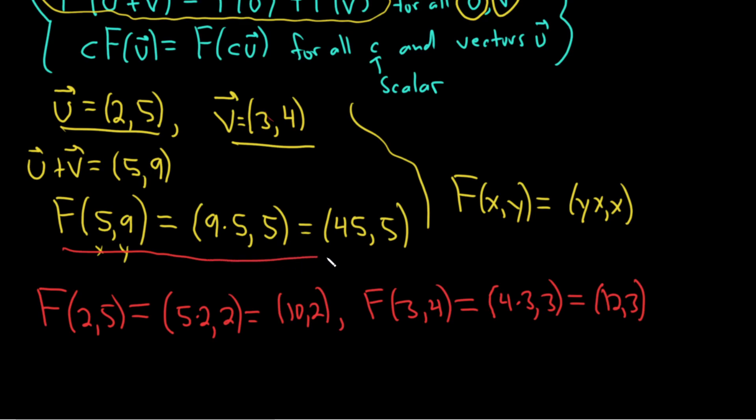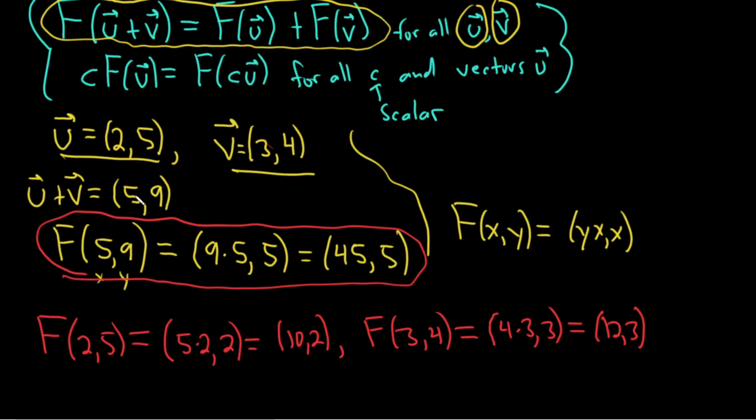So now we're going to check by adding these. So F of 5, 9 is equal to this. That's F of u plus v. That's the left-hand side. So it's this. So now we need to add F of u and F of v. So we're going to add these two together. So when we add these, we're doing F of 2, 5.